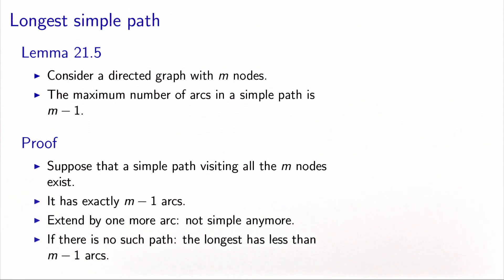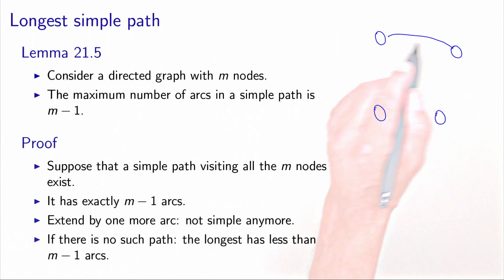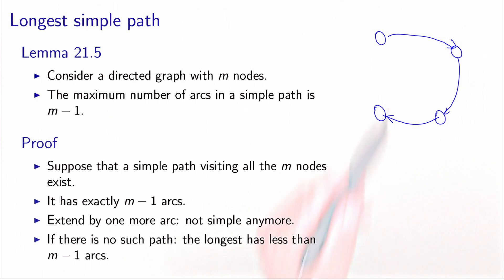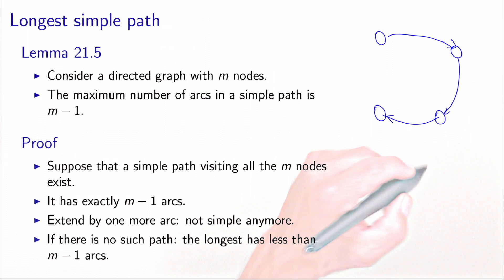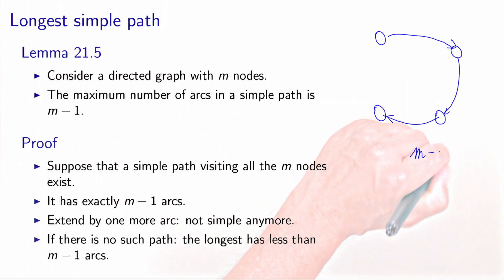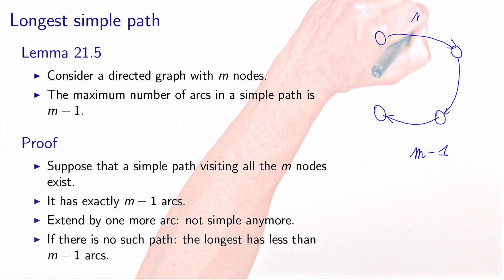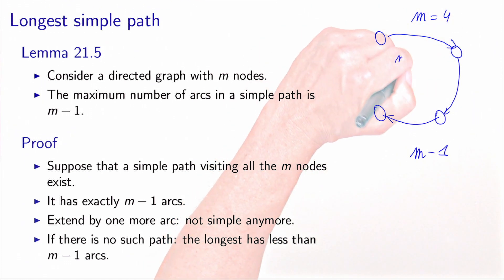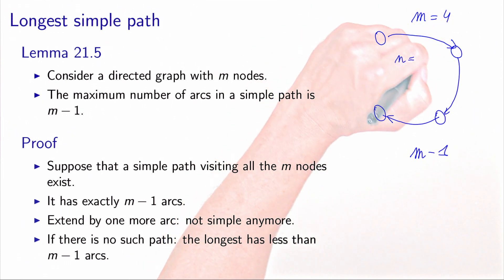First, suppose that we have a simple path visiting all the nodes in the network. We have four nodes, and assume that we have a simple path that visits all these nodes. Because the path is simple, the number of arcs in this path is m-1. So in this case, m equals four, and the number of arcs is equal to three.